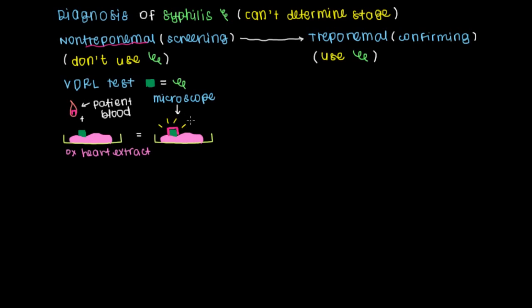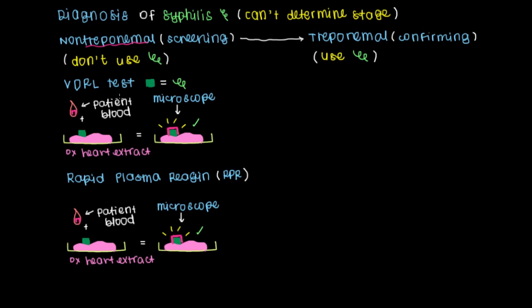Moving on, the next non-treponemal test we can do is referred to as a rapid plasma reagent test, or RPR, which as you can see here, is exactly the same as the VDRL test. The only two differences is that we add these carbon particles to our well.